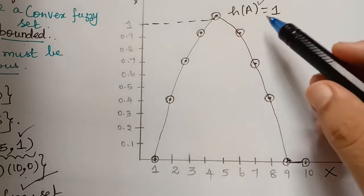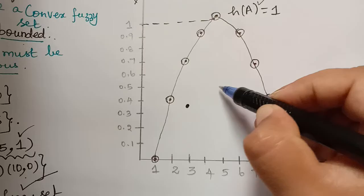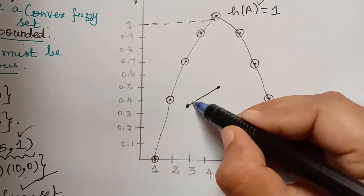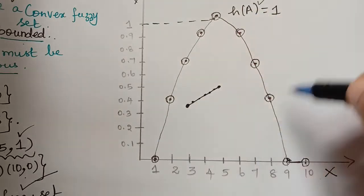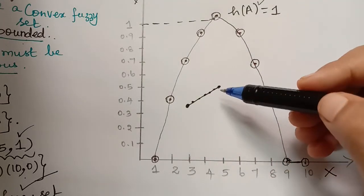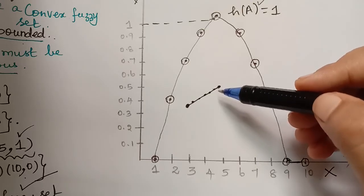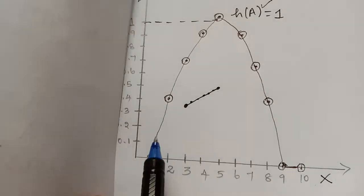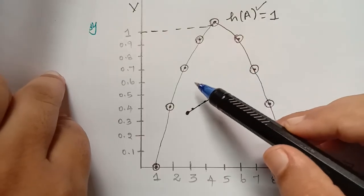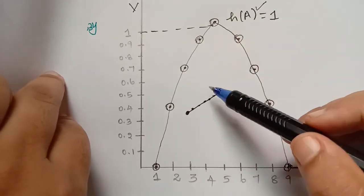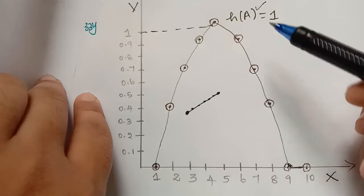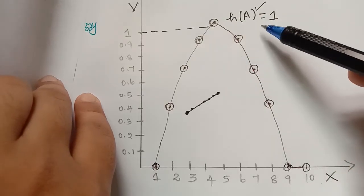The second condition is convexity. If we consider two points in this fuzzy set and join those two points, all the points on this line segment lie within the graph. Then the fuzzy set is said to be a convex fuzzy set. Whenever we choose two points within a set, join them with a line segment, and all points on that segment lie within the same set, the set is said to be a convex set.